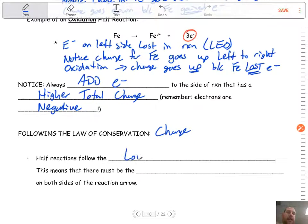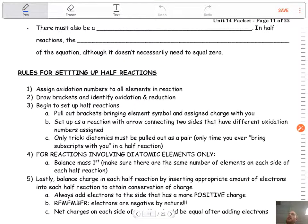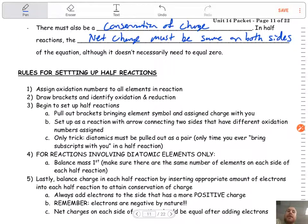Following the law of conservation of charge, half reactions also follow the law of conservation of mass. This means that there must be the same number of atoms on both sides of the reaction. So not only are they following the law of conservation of charge - you've got to have charges neutralized or balanced out on both sides - but it's also the law of conservation of mass. We've done this already, we've balanced reactions. We've got to keep that in mind as we go through these half reactions, that everything in the end has to be balanced.